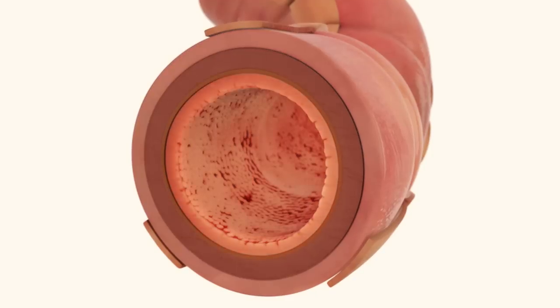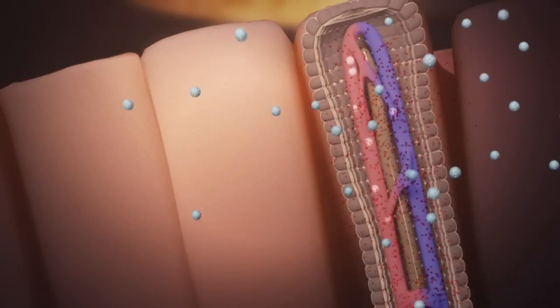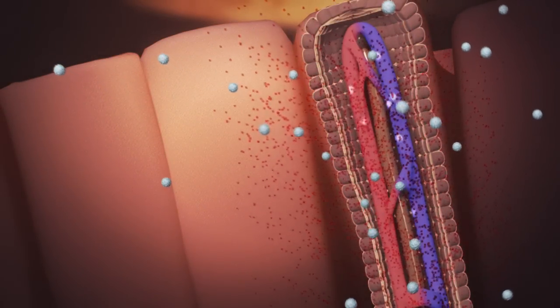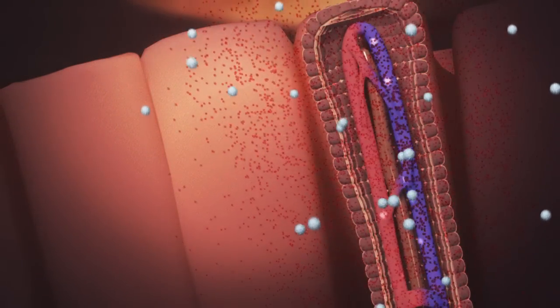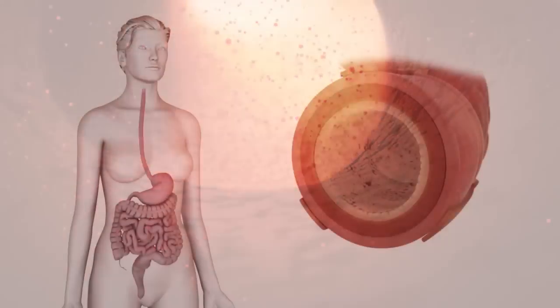In people with colitis, something causes your immune system to launch an attack within the GI tract that won't shut off, and because the attack goes on, it causes the walls of the GI tract to become inflamed and the symptoms of UC to appear.